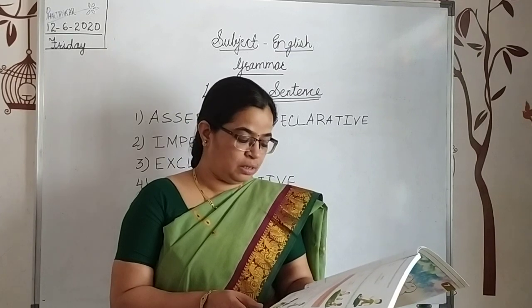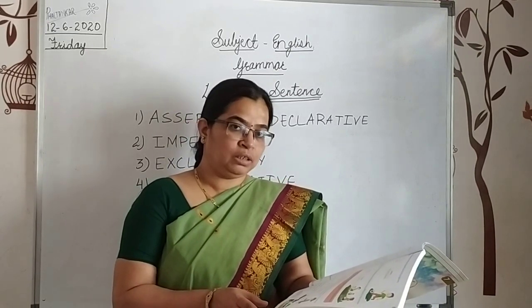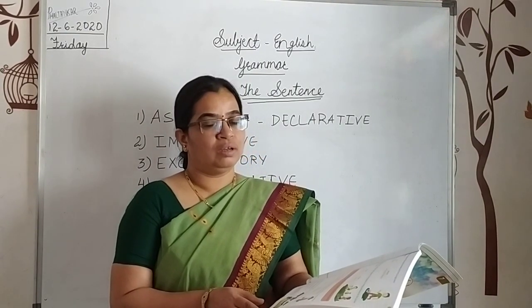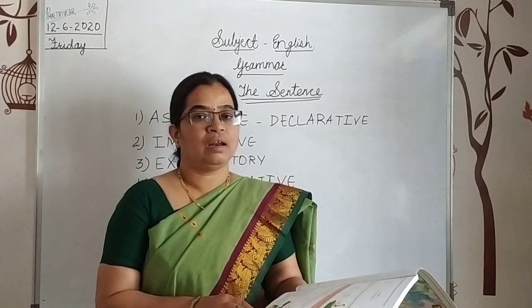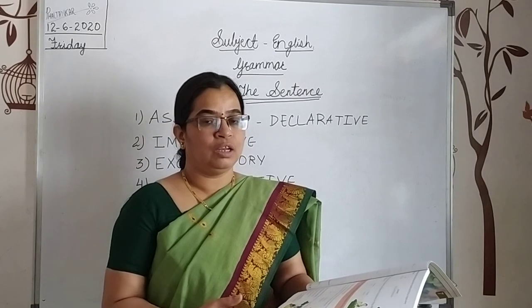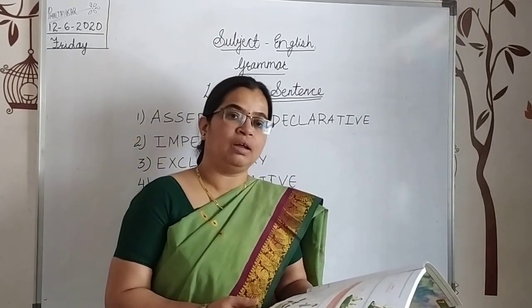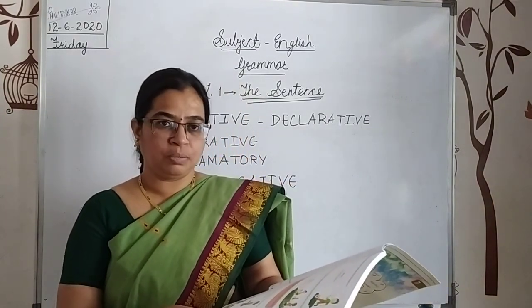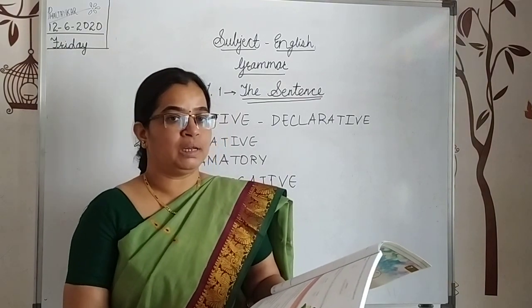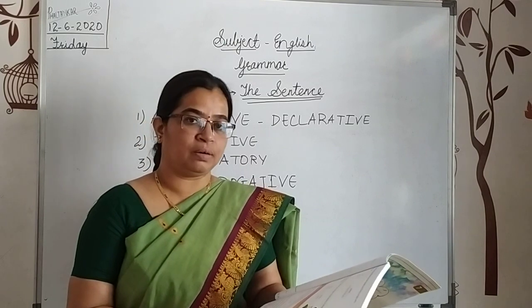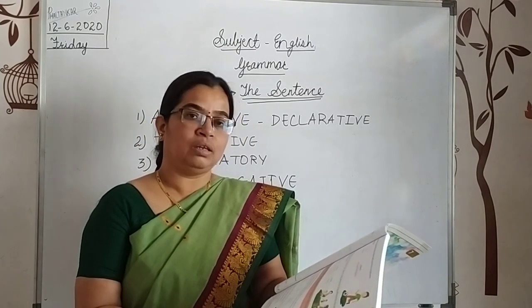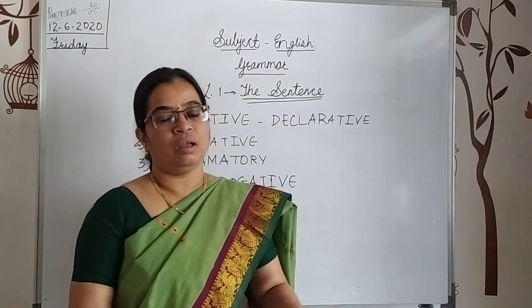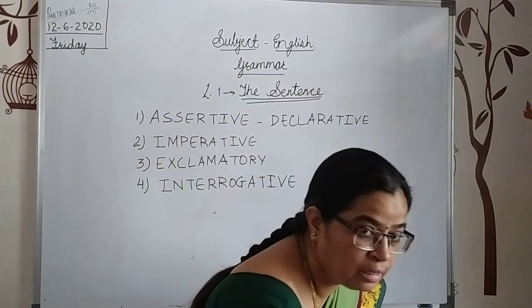The sixth sentence is: 'Down the river went the wooden boat.' Ask the question to the verb — who is going down? The answer is 'the wooden boat.' Notice that the subject appears after the predicate here. The subject may be at the position of the object, but you must identify who is doing the action. So circle 'the wooden boat' and underline 'down the river went.'